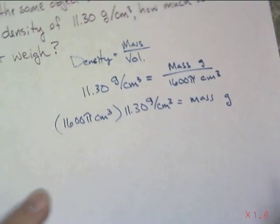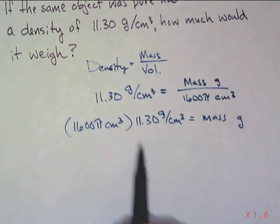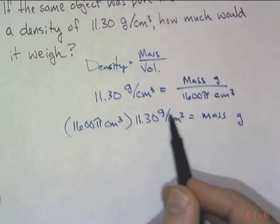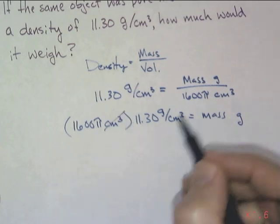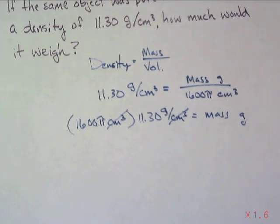Does that work out? Well, if you look at your units, there's centimeters cubed here, and this is divided by centimeters cubed. So those centimeters cubed will cancel out, leaving me with grams—mass in grams. Okay.